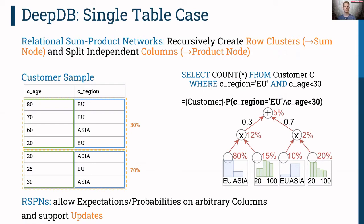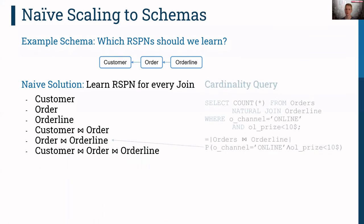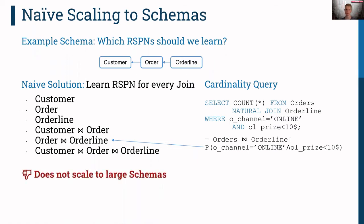We can naively generalize this technique to joins. For instance, with a schema of customers, orders, and order lines, we could learn a model for every possible join, and at runtime use the corresponding model to compute the probability. However, this does not scale to large schemas, since we would have to learn many different models even for such a small schema.